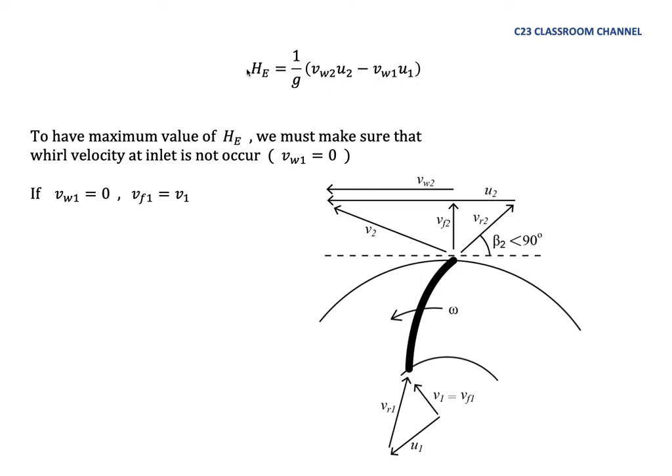If we look to this equation, to have maximum value of Euler head here, we must make sure that whirl velocity, V world 1 at the inlet, is equal to 0. We cannot have U2 or U1 equal to 0 because U2 and U1 is the rotational speed, the linear rotational speed of the blade. So the only possibility to have maximum value of Euler head here is to reduce the value of V world 1.